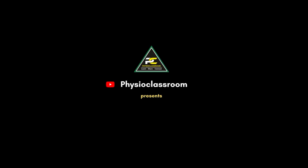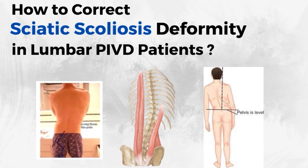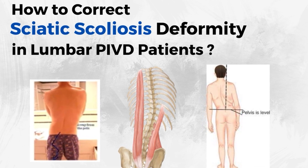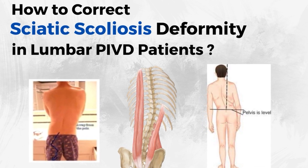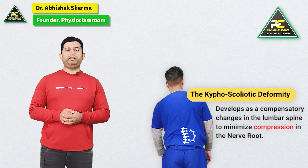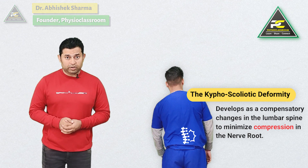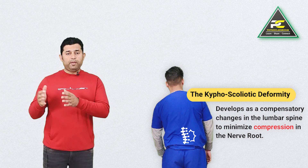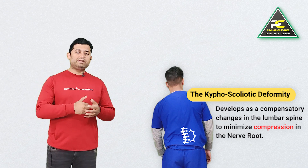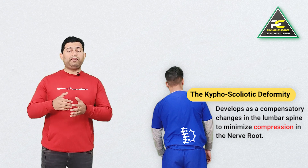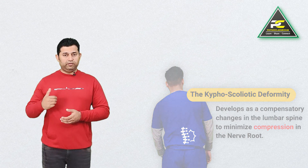In this video we are going to learn through practical demonstration how to correct the sciatic list or sciatic scoliosis deformity in lumbar PIVD patients. The kyphoscoliotic or scoliotic deformity in lumbar PIVD patients can sometimes develop as a result of compensatory postural changes in the lumbar spine to minimize compression over the nerve root.